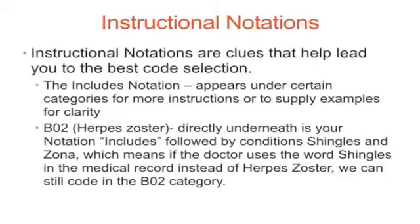Instructional notations are clues that help lead you to the best code selection. The Includes notation appears under certain categories for more instructions or to supply examples for clarity. For example, B02, herpes zoster, has directly underneath it the notation 'Includes,' followed by the conditions shingles and zona, which means if the doctor uses the word 'shingles' in the medical record instead of herpes zoster, we can still code in the B02 category.